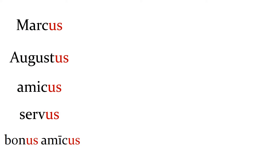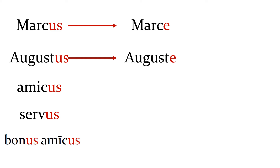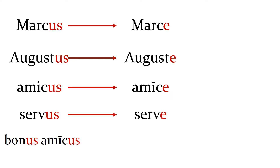So if you have a friend named Marcus, we're going to change the ending. If you're speaking directly to Marcus, you're going to call him Marce — that -us becomes an -e. If you're speaking to your friend Augustus, you're going to change the -us to -e and call him Auguste. Hey friend would be amice. Servus is a slave or servant — if you want to call that servant you would say Serve. And for bonus amicus, a good friend, you would say bone amice. Very simply, the -us changes to an -e.